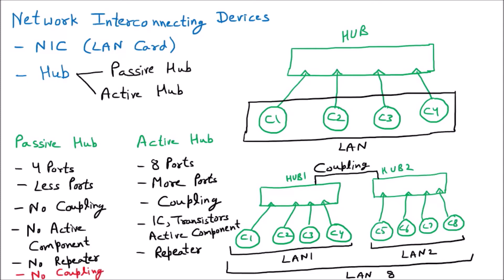The problem with the passive hub is no coupling, which is resolved by the active hub. But the active hub has its own major problem: the physical connection. A physical connection also exists in the passive hub but is less of a problem there. The property of the hub is that all ports are connected with a single wire, and this wire is called the physical connection.